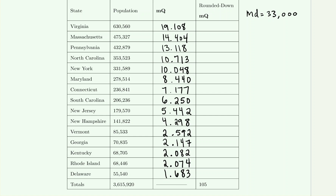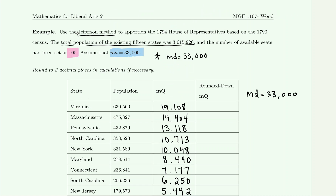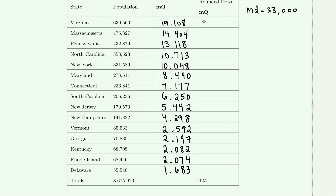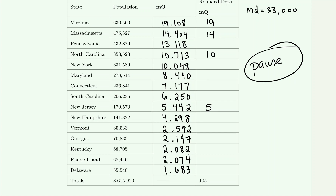Now, using the Jefferson method, once you get the MQ value, regardless of how close the value is to the next highest integer, you always round down. Virginia's MQ of 19.108 rounds down to 19. Massachusetts's 14.404 rounds down to 14. New Jersey's 5.442 rounds down to 5. North Carolina's 10.713, even though closer to 11, rounds down to 10. Pause the video and fill in the remaining rounded MQ values, then unpause to check your work.